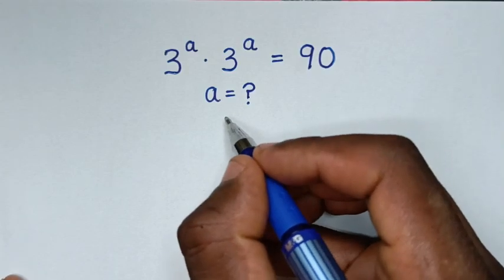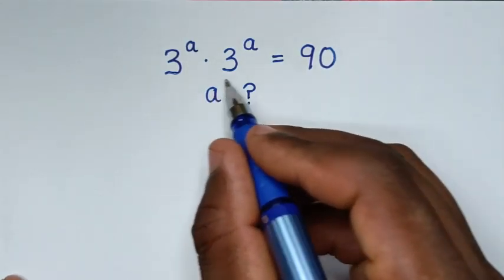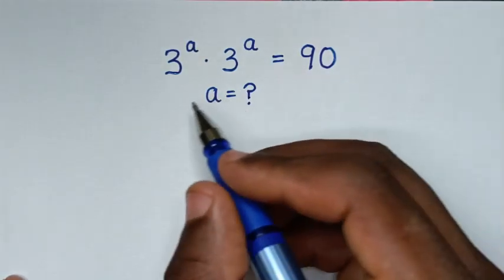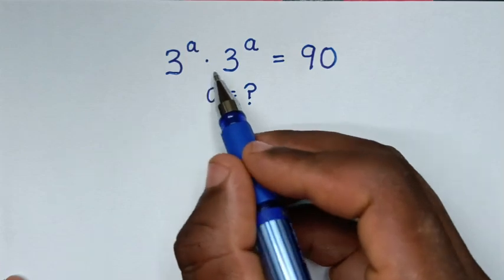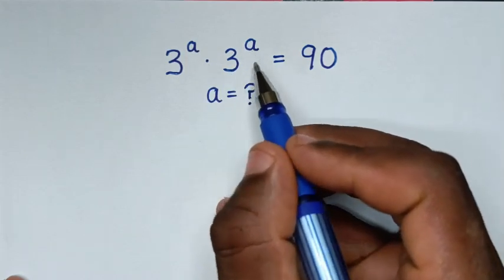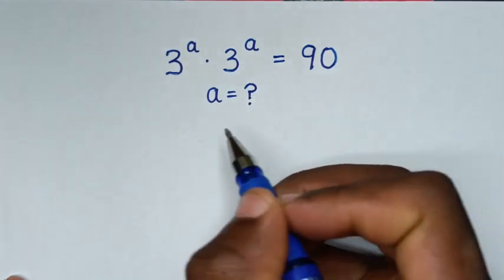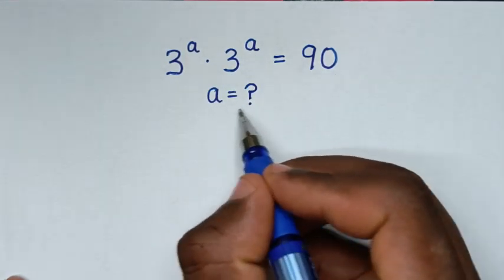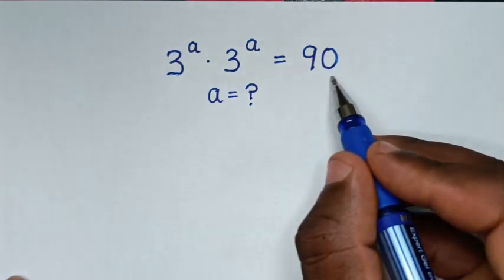Hello, you are welcome to solve this math problem which is 3^a times 3^a is equal to 90. We need to find the value of a from this equation.